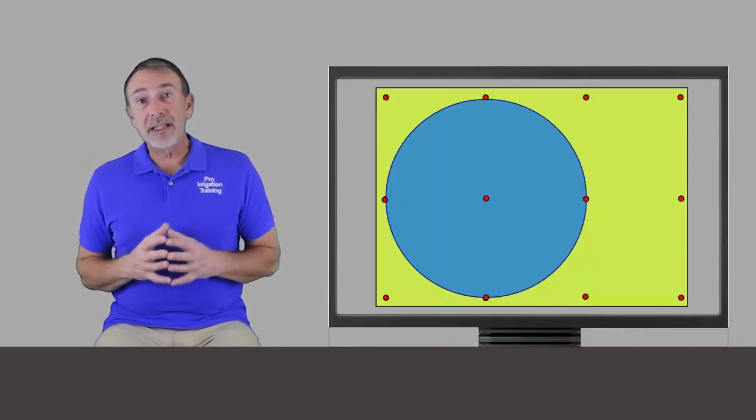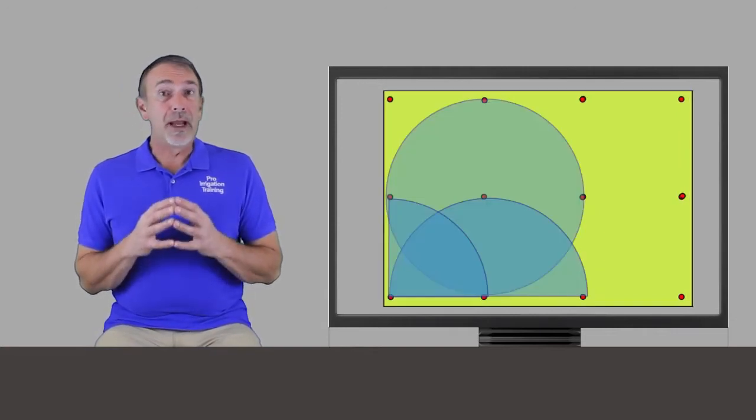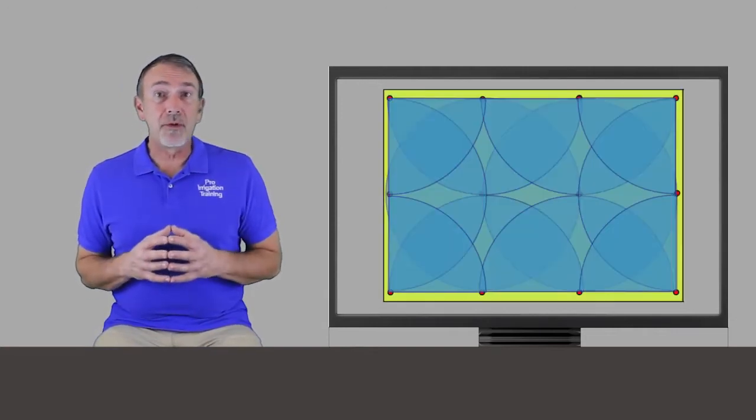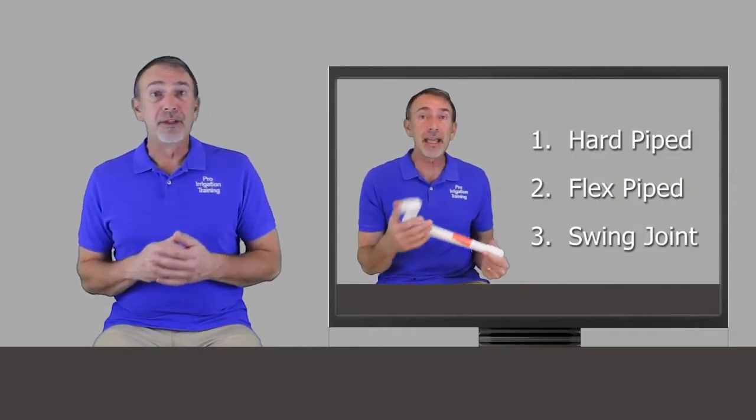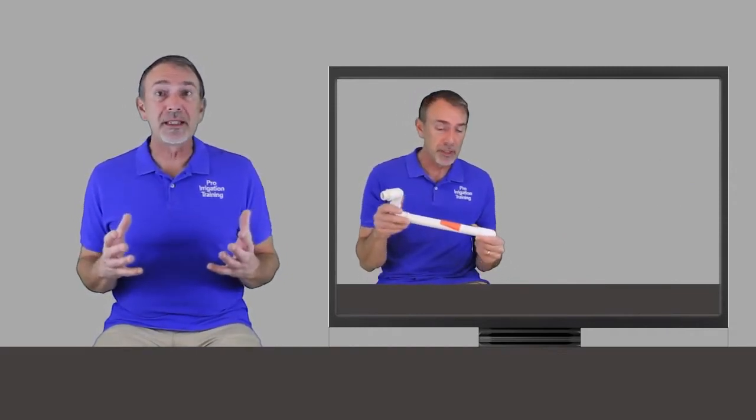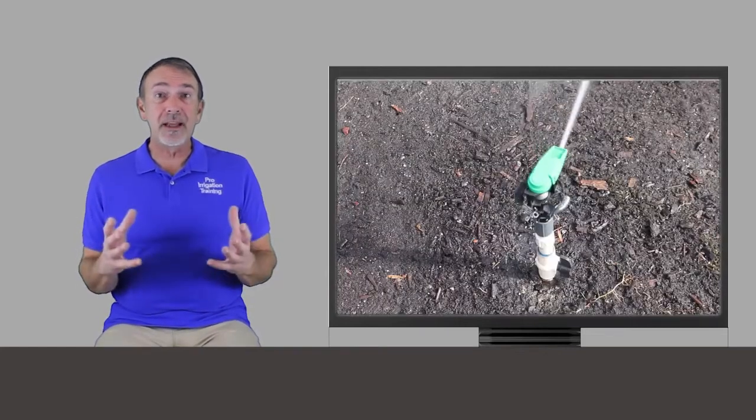We're going to talk about the concepts that you need. We're going to bear down on match precipitation rates. Make sure you really understand that. We'll talk about head-to-head coverage, the different ways that you can connect a sprinkler to the supply pipe, square versus triangular spacing, the different ways of adjusting the heads.